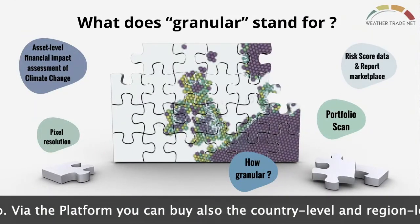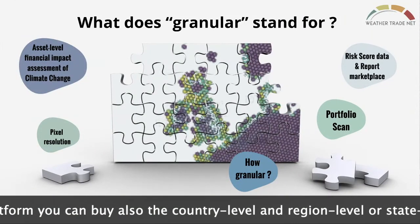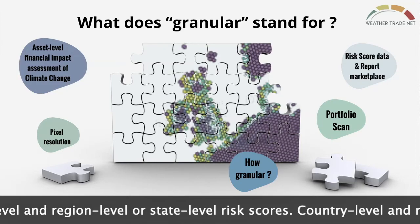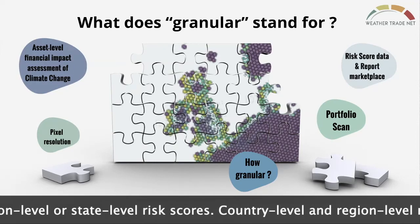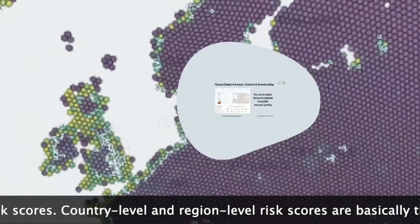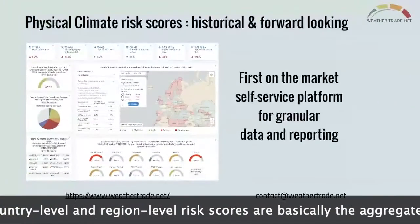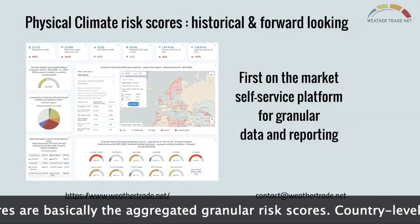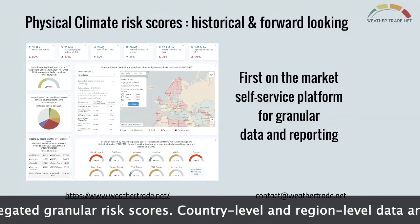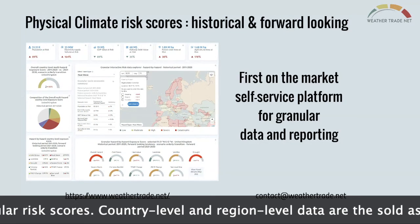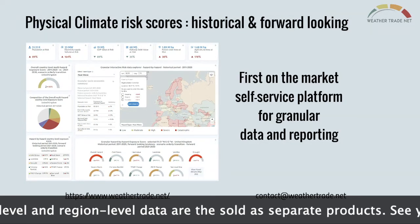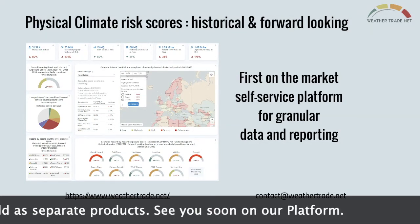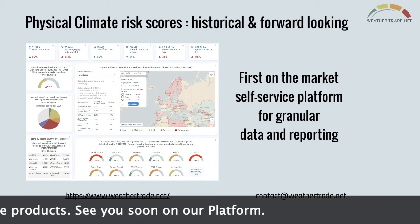Via the platform, you can also buy country-level, region-level, and state-level risk scores. Country-level and regional-level risk scores are basically the aggregated granular risk scores. Country-level and regional-level data are sold as separate products.